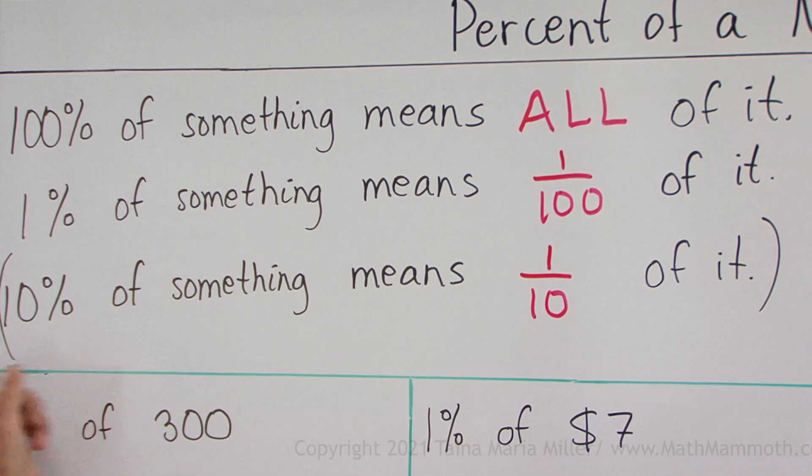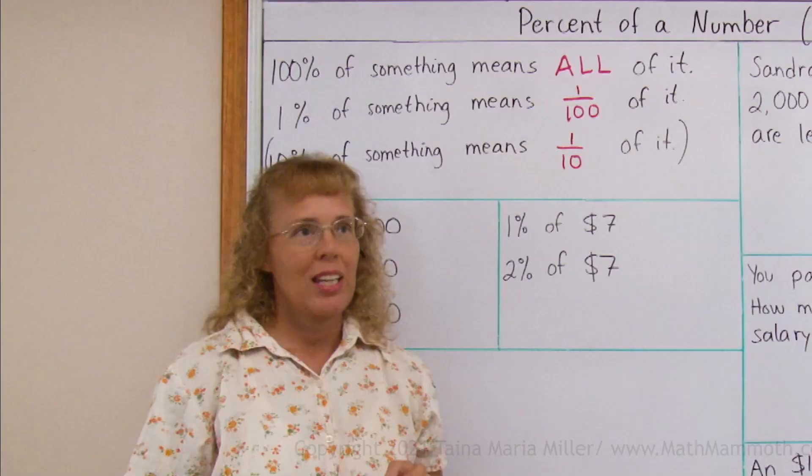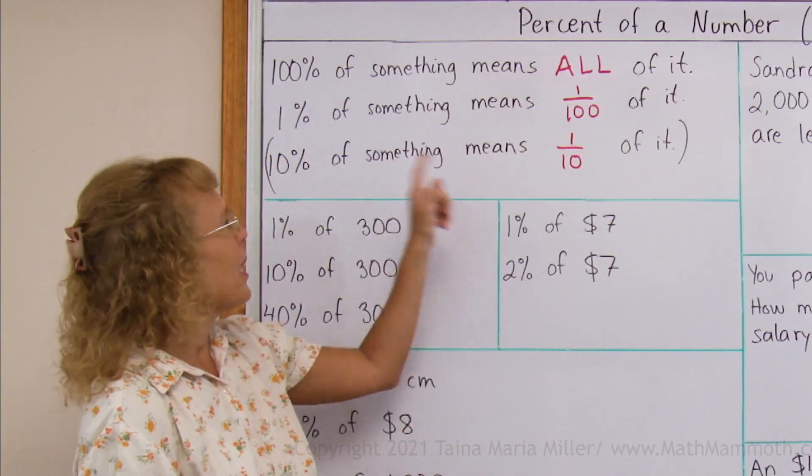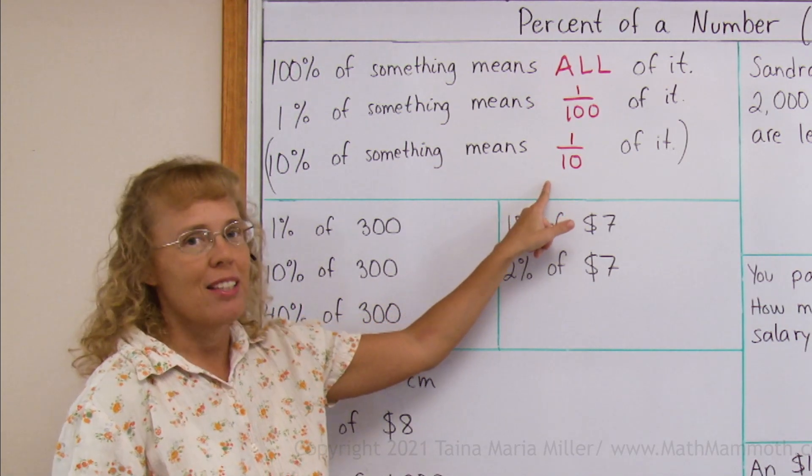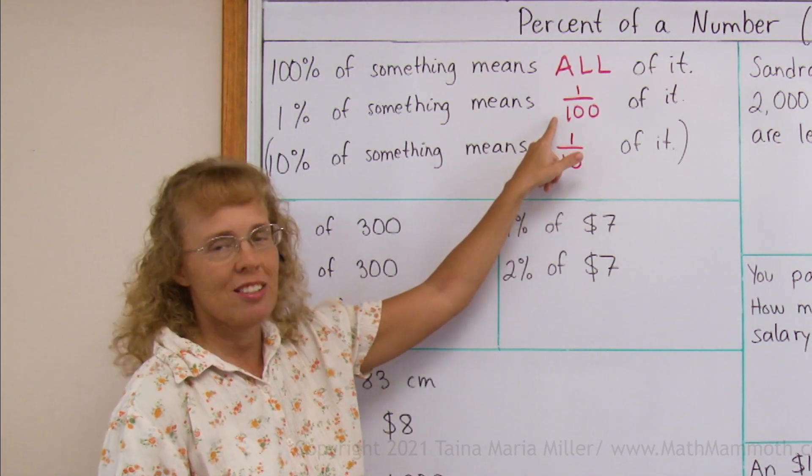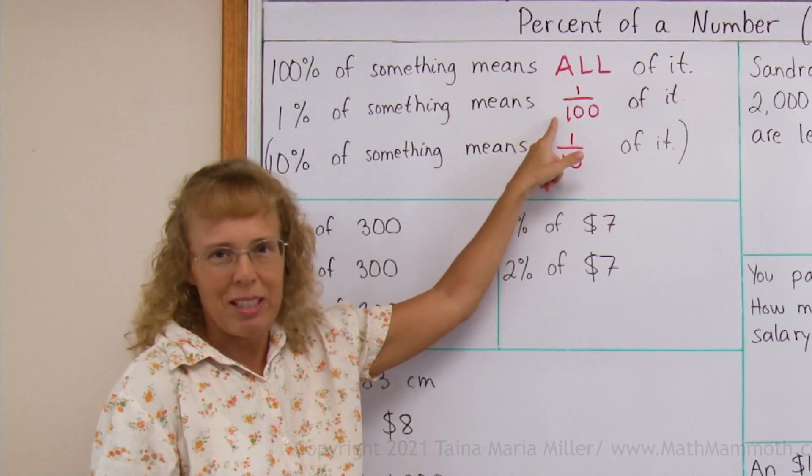And ten percent of something means one-tenth part of it. And as you know, dividing by ten, finding one-tenth, or dividing by hundred, finding one-hundredth is very easy mentally.